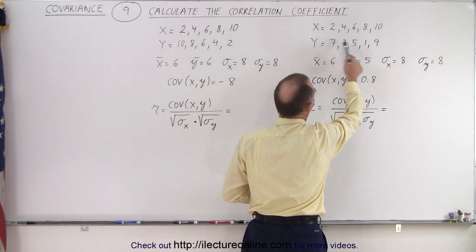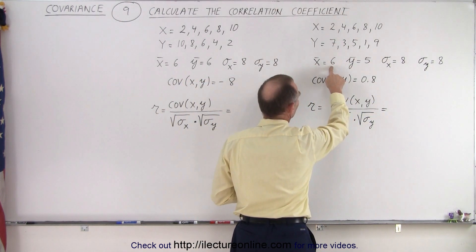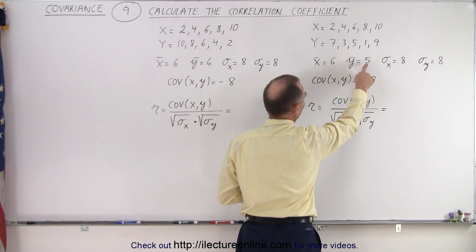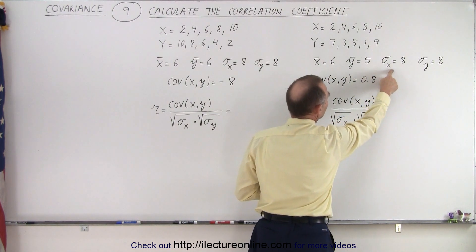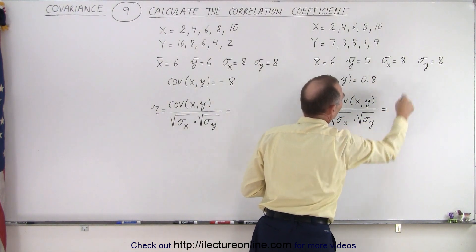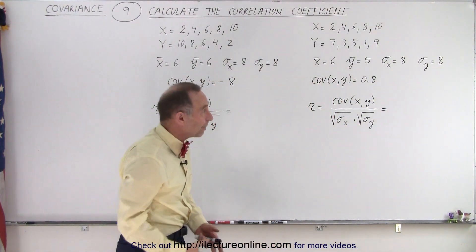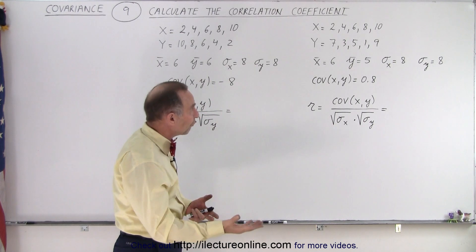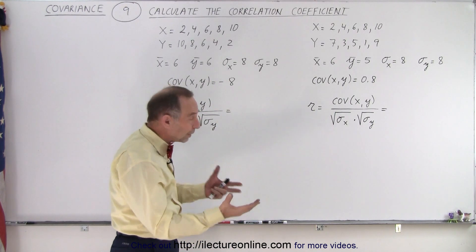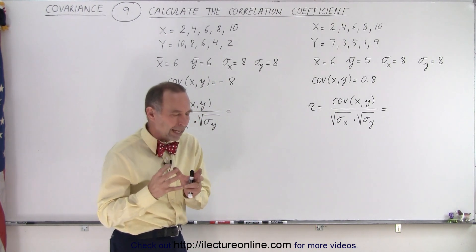We have the X data set and the Y data set. The average for X is 6, the average for Y is 5. The variances for both data sets happen to be the same: 8 and 8. And the covariance between the two data sets is 0.8.